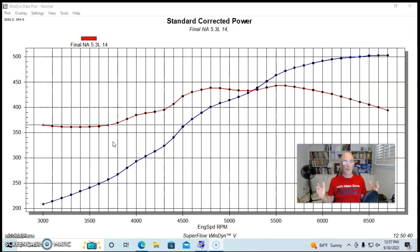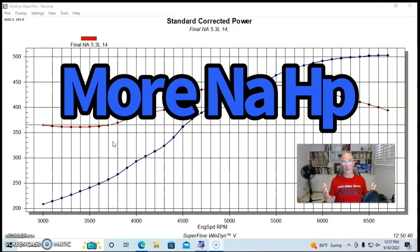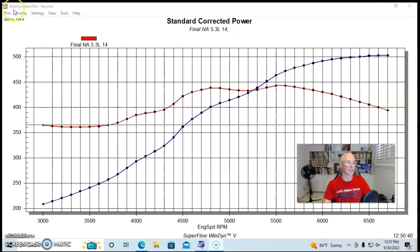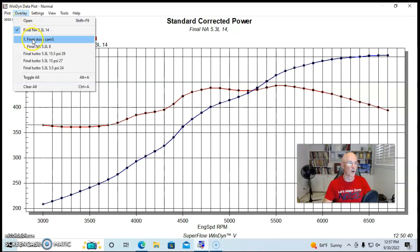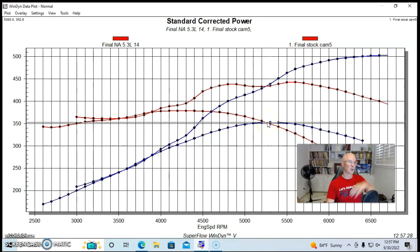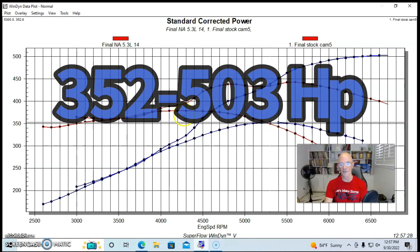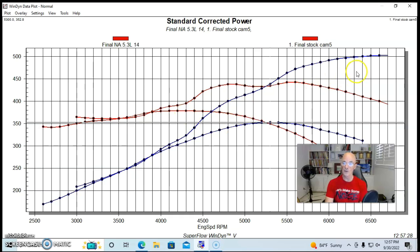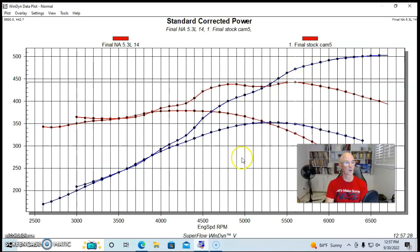When we improve the power output of our naturally aspirated combination, like we did here, in fact, I'm going to show you exactly how much we improved over a stock 5.3 liter. The stock 5.3, like we showed before, 350 ish horsepower and 370 or 80 foot pounds. Well, we've jumped this thing all the way up over 500 horsepower and peak torque checked in at 443 foot pounds.